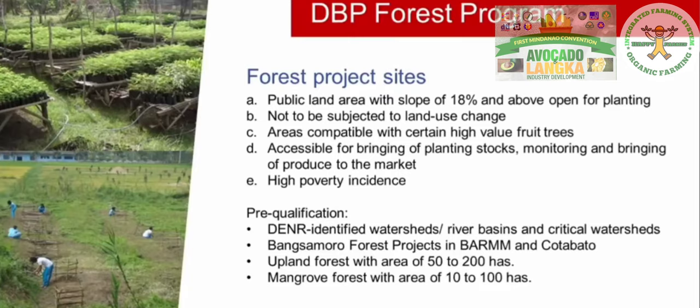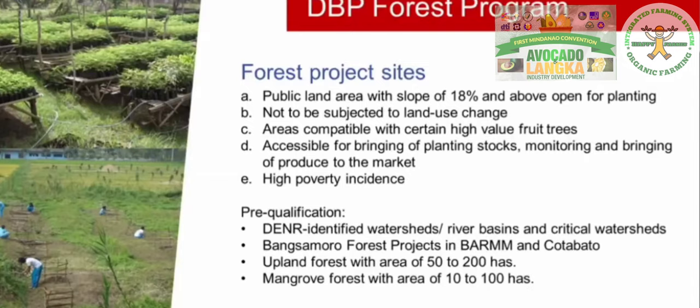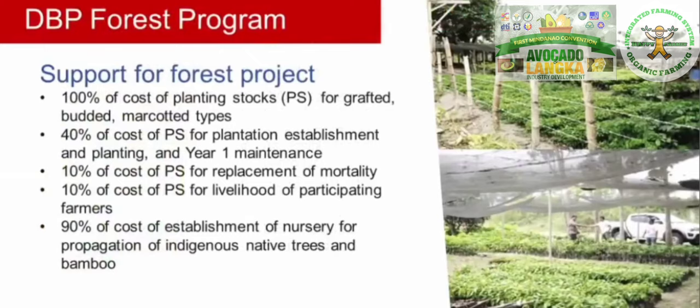The BARMM and its seat of government in Cotabato City include Lamitan and Marawi. An upland forest project must have an area of 50 to 200 hectares, while a mangrove forest project must have an area of 10 to 100 hectares.